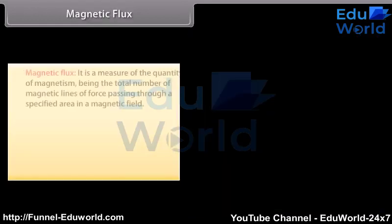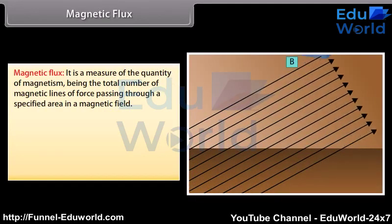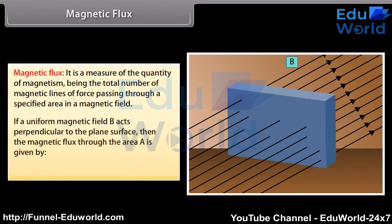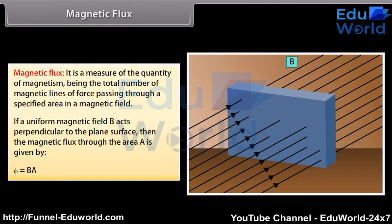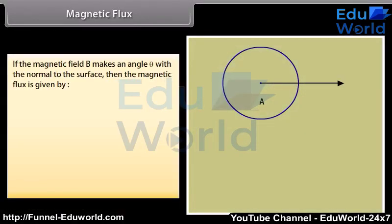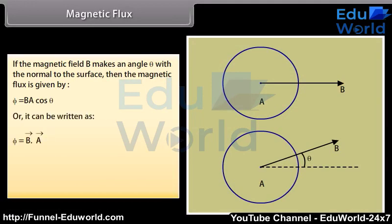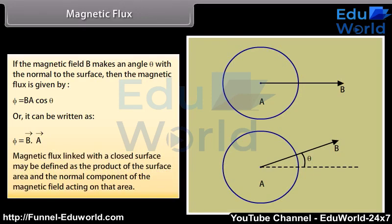Magnetic flux is a measure of the quantity of magnetism, being the total number of magnetic lines of force passing through a specified area in a magnetic field. If a uniform magnetic field B acts perpendicular to the plane surface, then the magnetic flux through area A is given by the product of B and A. If the magnetic field B makes an angle theta with the normal to the surface, then the magnetic flux is given by BA cos theta, or Φ = B · A (dot product). Magnetic flux linked with a closed surface may be defined as the product of the surface area and the normal component of the magnetic field acting on that area.